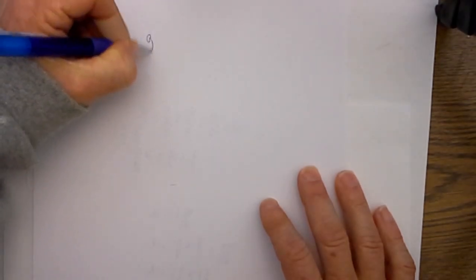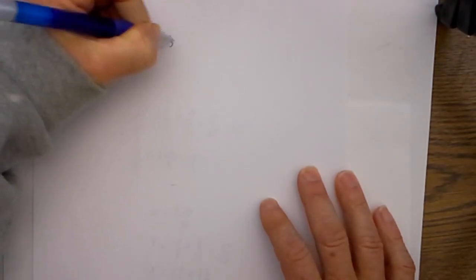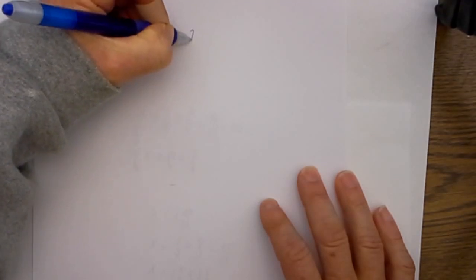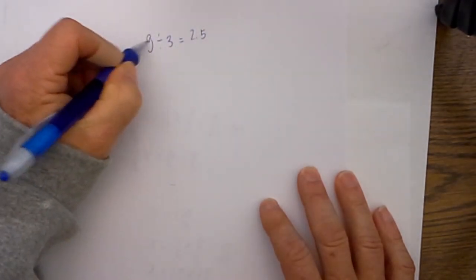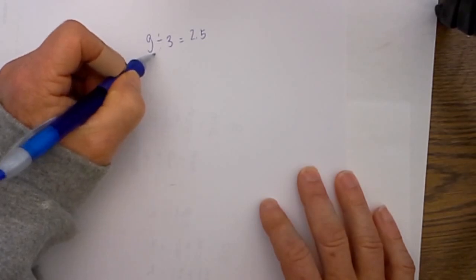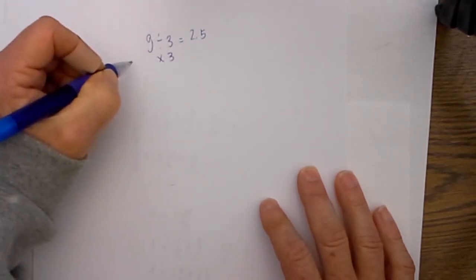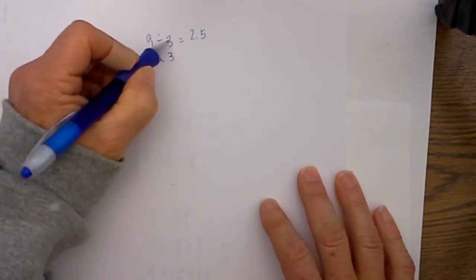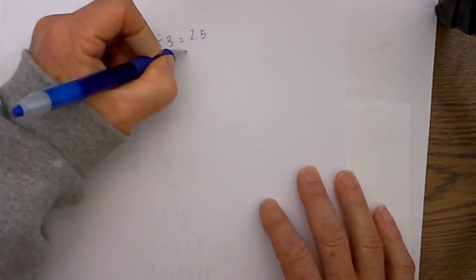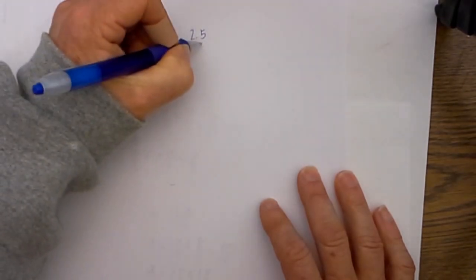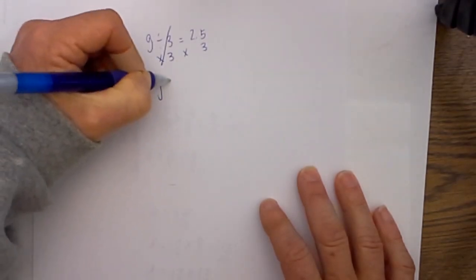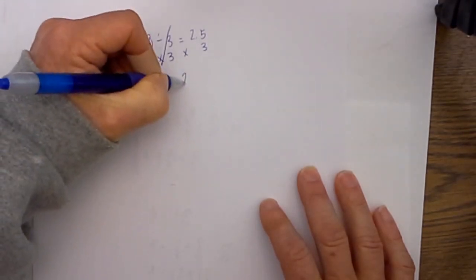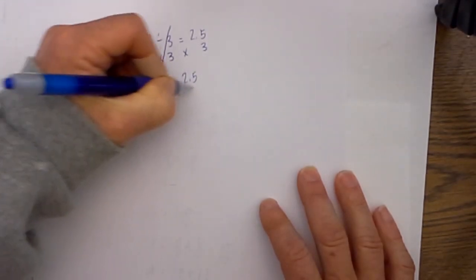This first one will be one with division. I have g divided by 3 is equal to 2.5. I know to isolate the variable I need to multiply by 3. And the rule with one step equations is what you do to one side you must do to the other. So I will multiply 3 on both sides. The 3's cancel and I am left with g is equal to 2.5 times 3.